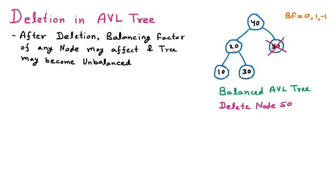Now we find the updated balancing factors. All leaf nodes still have a balancing factor of 0. For node 20, we have 1 level on the left and 1 level on the right, so 1 minus 1 equals 0. For node 40, we have 2 levels on the left but nothing on the right because node 50 no longer exists. So 2 minus 0 equals 2. Checking the tree: all other nodes are fine with values 0, but node 40 has a balancing factor of 2, which is a problem.